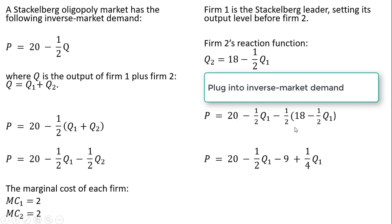Minus 1/2 times 18 is minus 9. Minus 1/2 times minus 1/2 Q subscript 1 gives us plus 1/4 Q subscript 1. Simplifying further, 20 minus 9 is 11, and minus 1/2 Q subscript 1 plus 1/4 Q subscript 1 leaves us with minus 1/4 Q subscript 1.